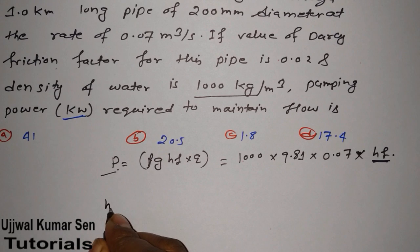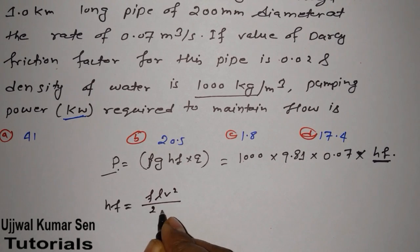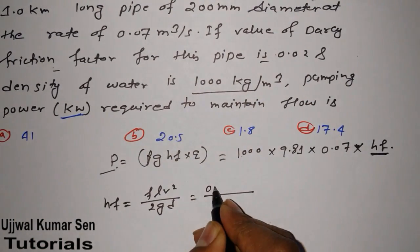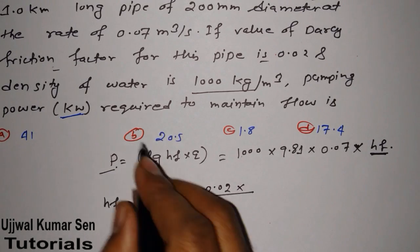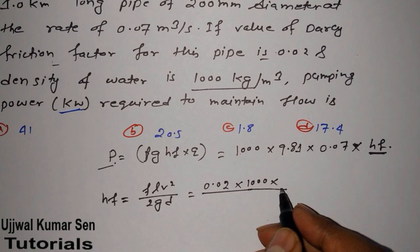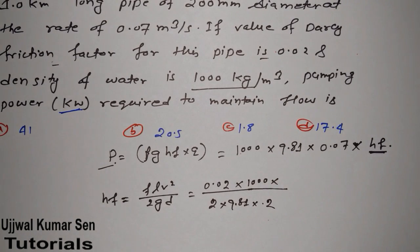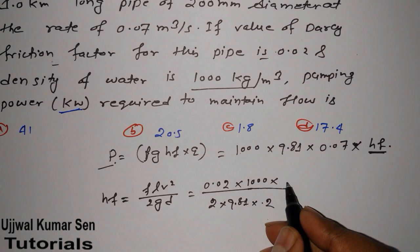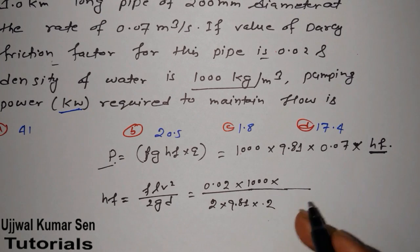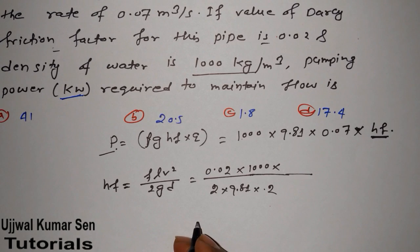So H_F = (f × L × V²) / (2 × G × D). The friction factor f = 0.02 is given. Length L = 1 km = 1000 m — unit conversion is very important here. G = 9.81 m/s², and diameter D = 200 mm = 0.2 m. We still need velocity V, then we can find H_F.